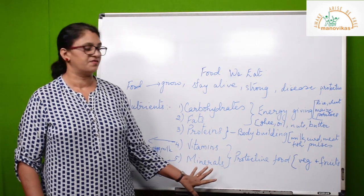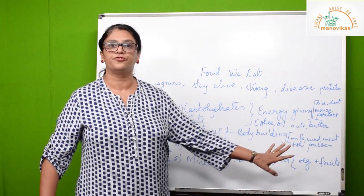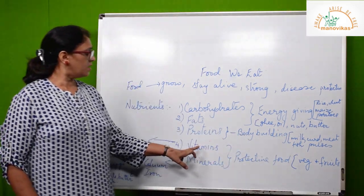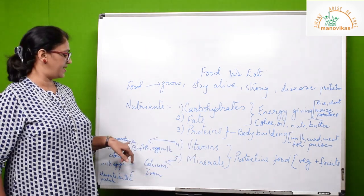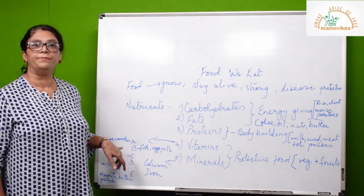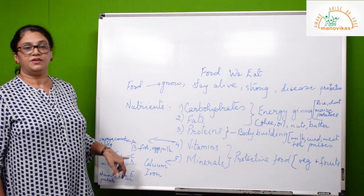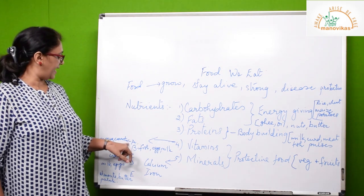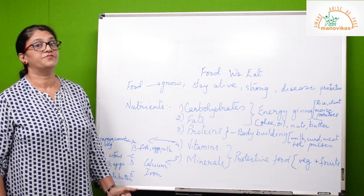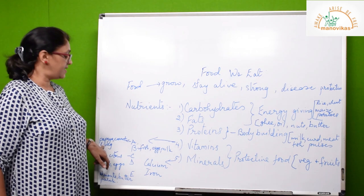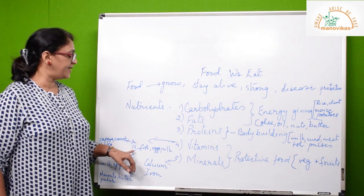Foods rich in vitamins and minerals are vegetables and fruits. Some of the vitamins you need to know are vitamin A, B, C, D, and E. Vitamin A is found in carrots and is very good for your eyesight; it is also found in papaya and leafy vegetables.